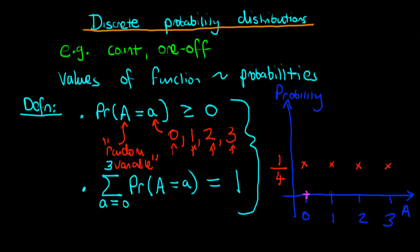Another distribution might be one where we imagine that the bag always contains more than one apple. In this case, the probability of there being zero or one apple is both zero. The probability of there being two or three apples are, let's say, equal. In order to satisfy the second condition, we require that the probability of two or three apples are both equal to one half — though we don't strictly need them to be equal; I'm just assuming that here.